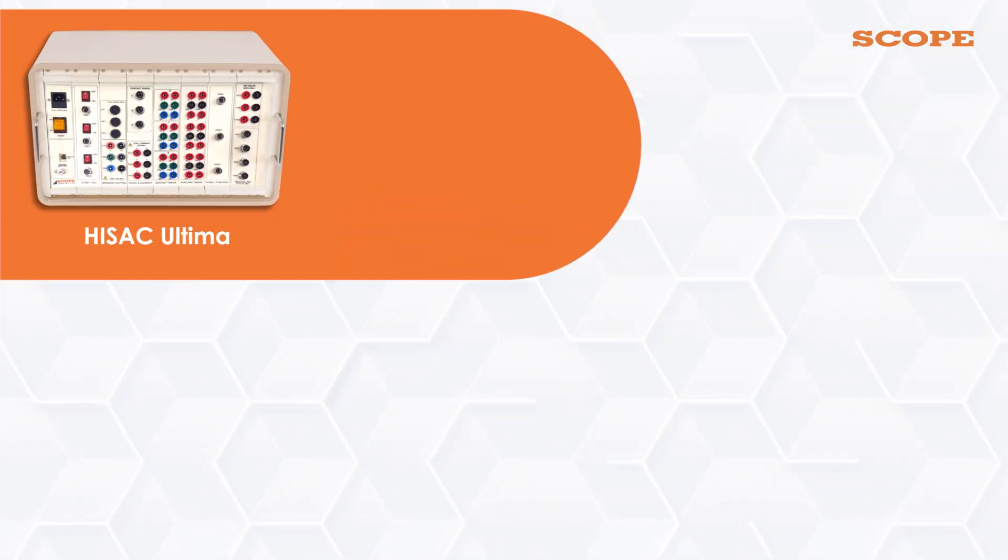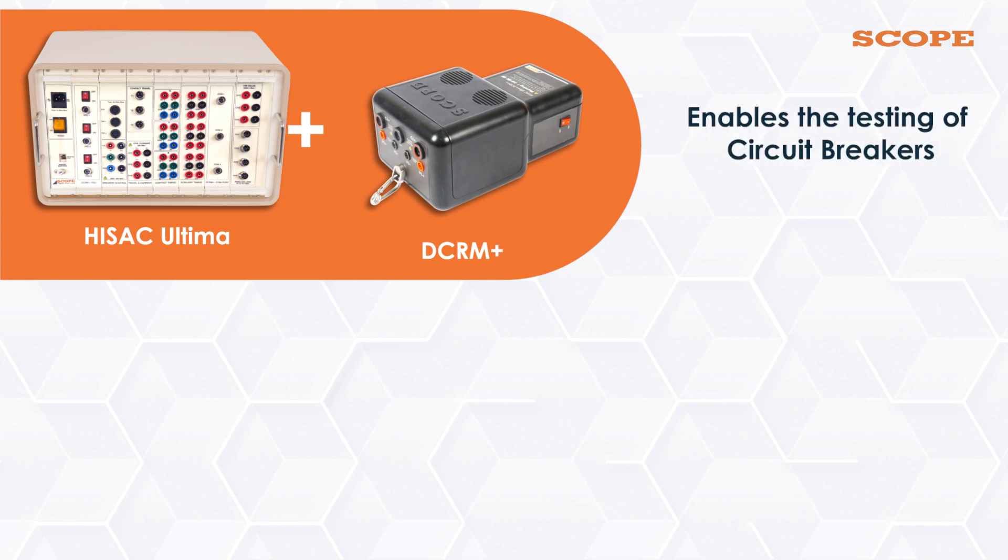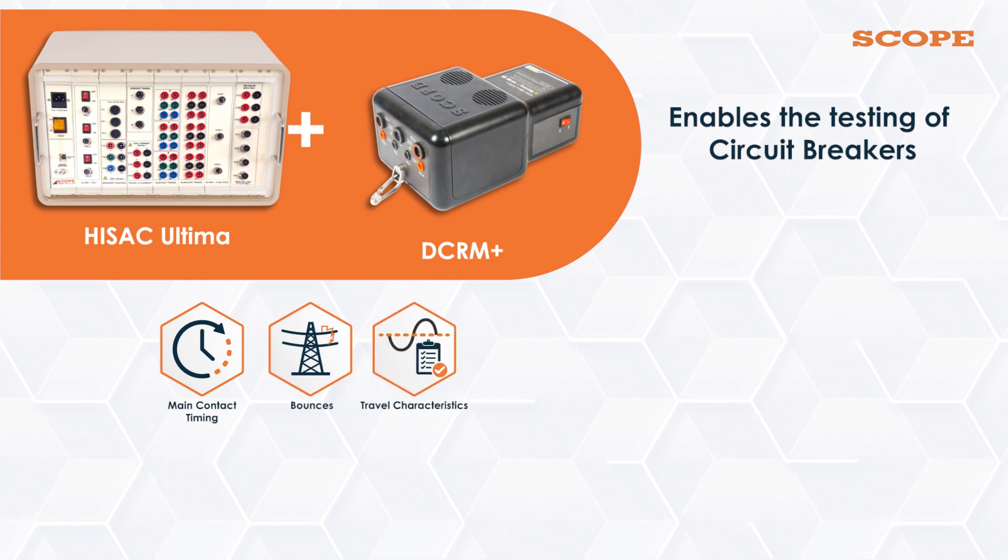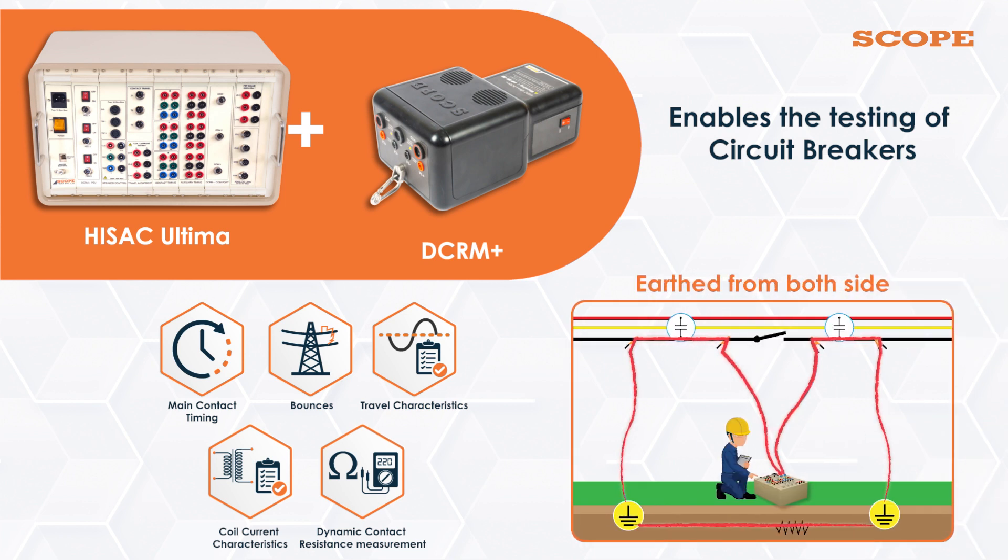HiZac Ultima, coupled with DCRM Plus, enables the testing of circuit breakers for main contact timing, bounces, travel characteristics, coil current characteristics, and dynamic contact resistance measurement while the circuit breaker is earthed from both sides.